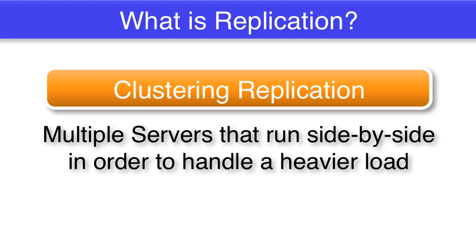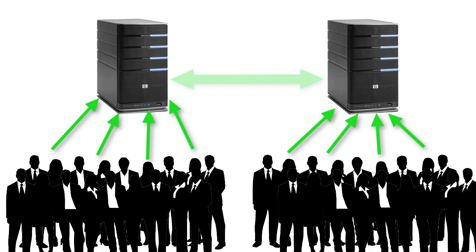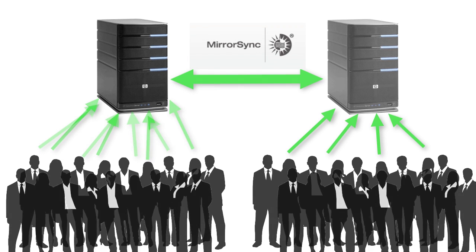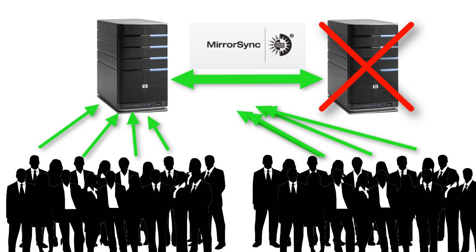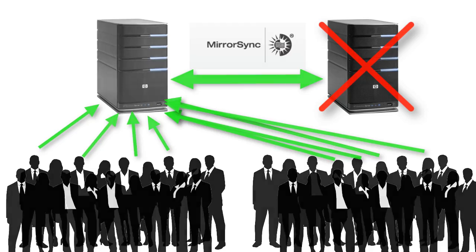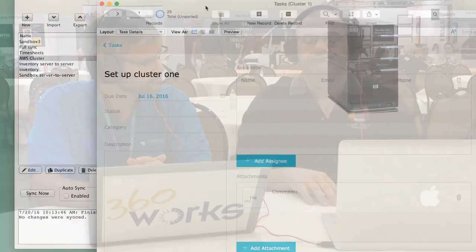Being able to have two FileMaker servers and use MirrorSync to keep the two in sync with each other — so any change made in one immediately appears in the other. And then if you're hosting those on Amazon, you set up Amazon load balancing so that all of your clients connecting to the FileMaker database will be randomly switched between one or both of them, splitting your total load in half for each server, and making it so if one server goes down or needs software updates, all that traffic can shift to the other one temporarily.